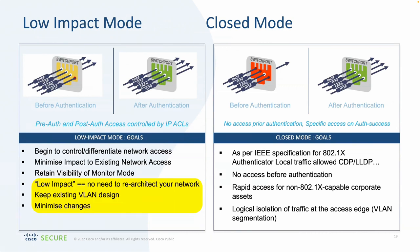Low impact mode allows you to have a pre-auth ACL to protect the network environment, and allows certain services through to the client so it doesn't reboot because it didn't get an IP address from DHCP. Closed mode, however, closes off all traffic except for CDP, LLDP, and the 802.1X protocols. That's why you might need to choose one mode over the other for a specific type of client. But it also presents a problem — when you change authentication modes on a specific port, it causes that port's session to restart, so you'll want to do that in a controlled way.